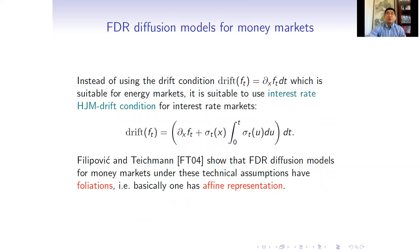Let's recall a famous result of FDR diffusion models for money markets. Instead of using the drift condition which is suitable for energy markets, it's suitable to use interest rate HJM drift condition for interest rate markets. Filipovic and Teichmann show that FDR diffusion models for money markets under these technical assumptions have affine representations. That is, basically, one has affine representation.